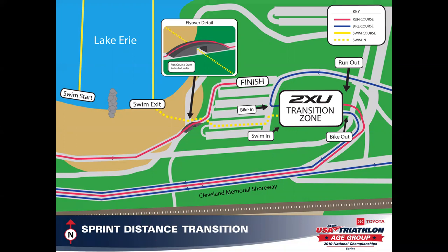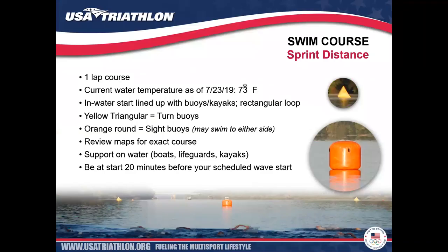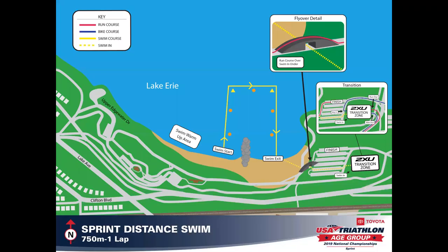For sprint distance transition, the layout is essentially the same with one difference: on the run out, you will not make a 180 like Olympic distance. Once you come up the on-ramp, continue straight down Cleveland Memorial Shoreway running westbound — one-way bike traffic and one-way run traffic on those lanes. Sprint swim is a 750-meter course; orange buoys are sight buoys and you may swim to either side. Review the maps for the exact course. There will be two sight buoys before your first turn buoy, an additional sight buoy between turns one and two, and two orange buoys at swim exit.